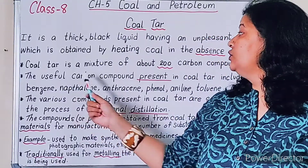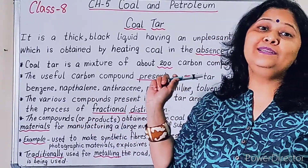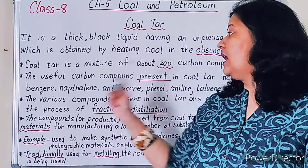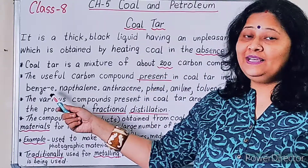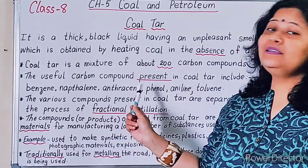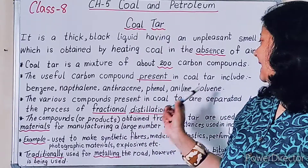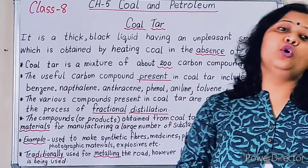The main useful carbon compounds present in coal tar are benzene, naphthalene, anthracene, phenol, aniline, and toluene.